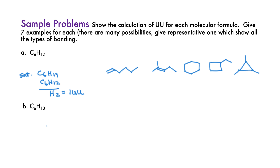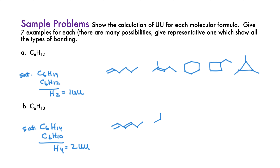In B, again subtract the formula from the fully saturated formula C6H14. There are four hydrogen atoms missing, which is two units of unsaturation. This means two double bonds, a triple bond, two rings, or a ring and a double bond. The first compound has six carbons in a row and two adjacent double bonds. We can also have a branched compound with two double bonds, a compound with a triple bond, a six-membered ring with a double bond, and finally a compound with two four-membered rings connected.